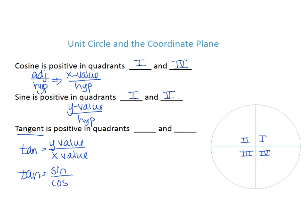Where is tangent positive? Tangent is the y value over the x value. So if both values are positive, tangent is positive — that's quadrant one. And if both values are negative, a negative divided by a negative is also positive — that's quadrant three. So those are the two quadrants where tangent is positive.